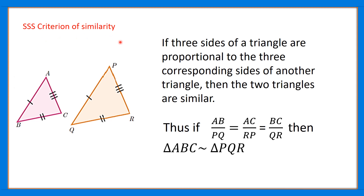The SSS criterion of similarity tells us that if the three sides of a triangle are proportional to the three corresponding sides of another triangle, then the two triangles are similar. For triangles ABC and PQR, if AB/PQ equals AC/RP equals BC/QR, then triangle ABC is similar to triangle PQR.